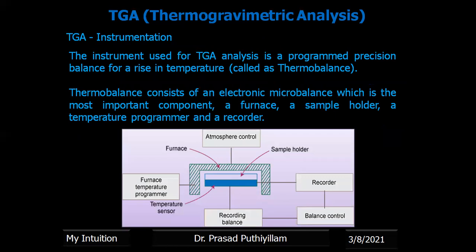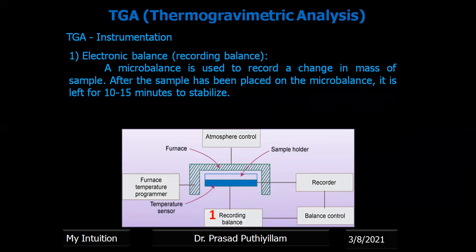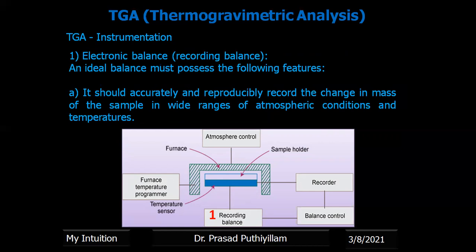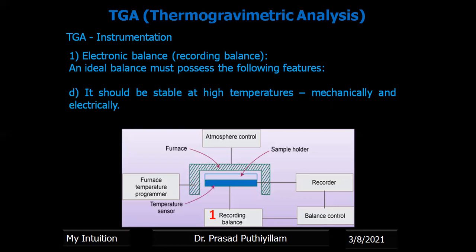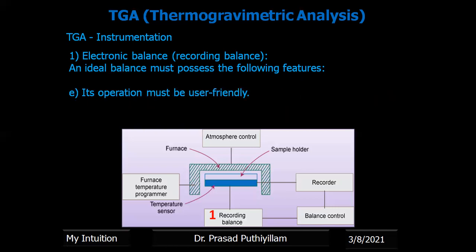The instrumentation of TGA — the instrument setup — is called a thermo-balance. The thermo-balance consists of a micro-balance, a furnace, a sample holder, a temperature programmer, a temperature controller and a recording system. The micro-balance is used to record the change in mass. The sample is kept in the micro-balance and left for 10 to 15 minutes to stabilize. An ideal balance should accurately and reproducibly record the change in mass in wide ranges of atmospheric conditions and temperatures, provide an electronic signal to record changes in mass, have rapid response to change in mass, be stable at high temperature both mechanically and electrically, and be user-friendly.